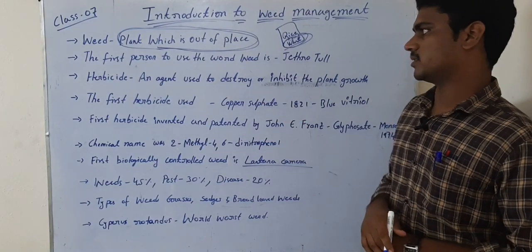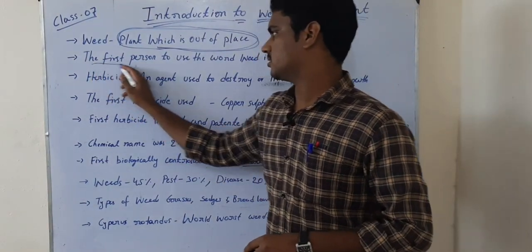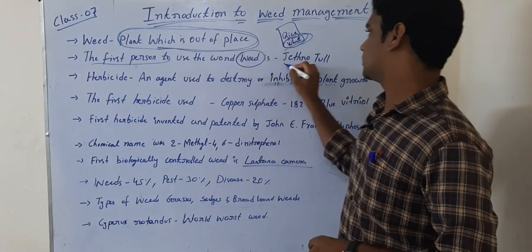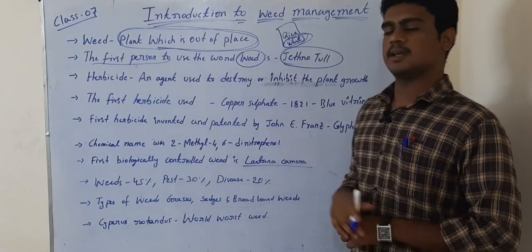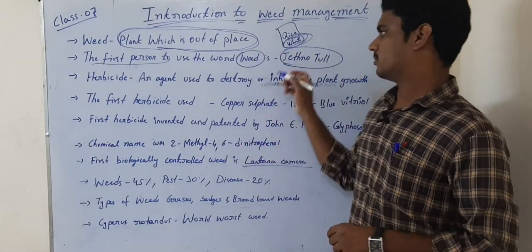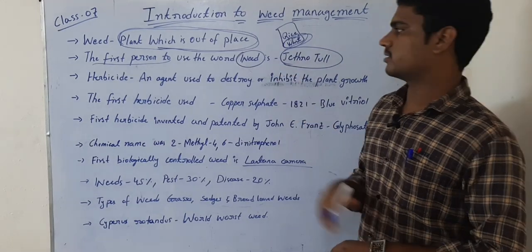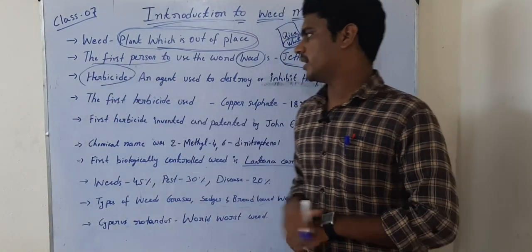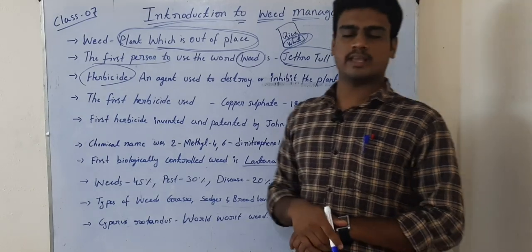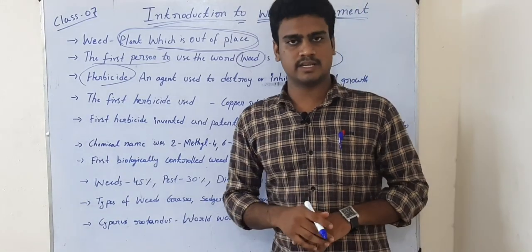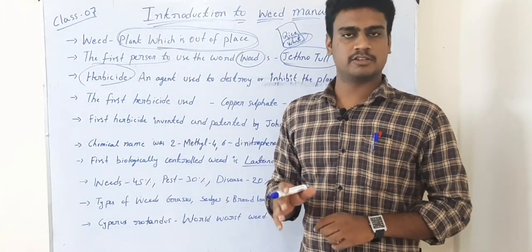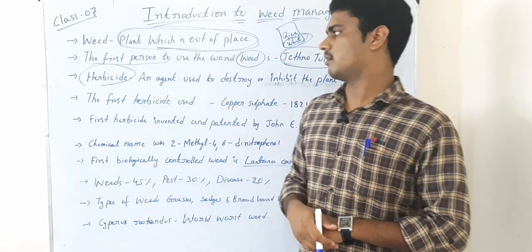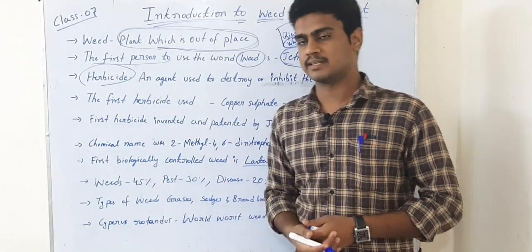The first person to use the word 'weed' is Jethro Tull, as I mentioned in the previous class. Next, let us define herbicide. A herbicide is a chemical substance which can kill, destroy, or suppress weeds. It may be any chemical substance or agent used to destroy or inhibit plant growth.